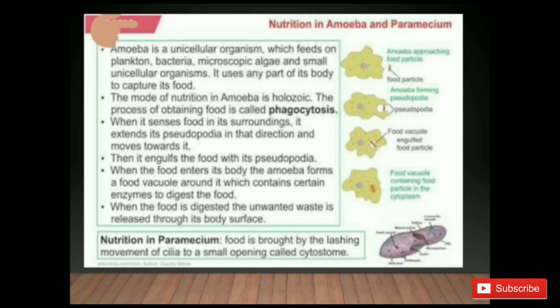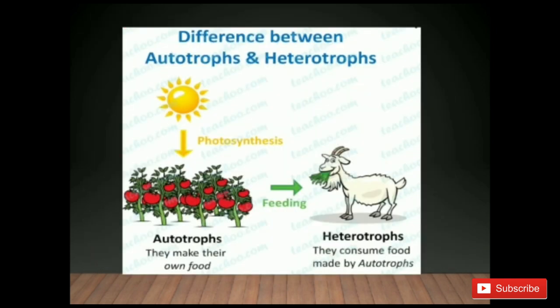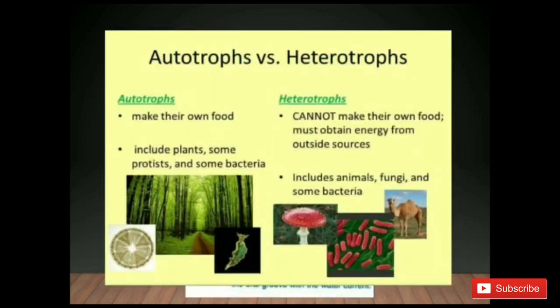In paramecium, food is taken in through a structure called the cytostome. Autotrophs make their own food — for example, green plants and some bacteria. Heterotrophs consume food made by autotrophs — examples include fungi, some bacteria, animals and humans.